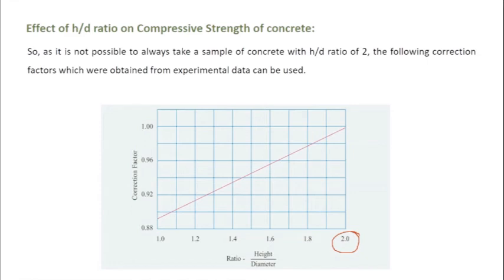So in such case, you have to use a correction factor. This correction factor is the factor that you have to multiply to the compressive strength that you got. So if the h by d ratio is 2, what is the factor? 1. So compressive strength of concrete equals compressive strength of specimen into correction factor.